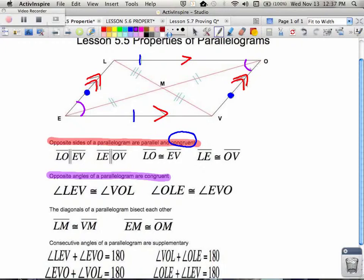Also, angle OLE, the angle on the top left, is congruent to angle EVO, the bottom right. So for example, those could both be 120 degrees. So far we have opposite sides are parallel and congruent, and opposite angles are congruent.